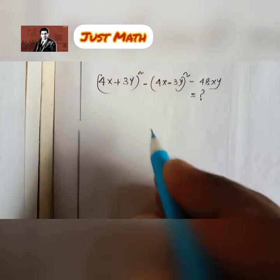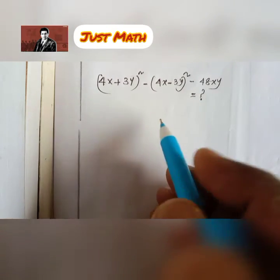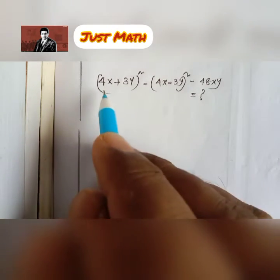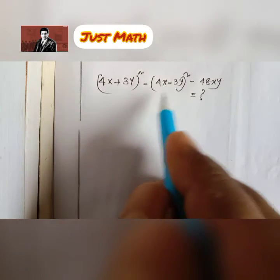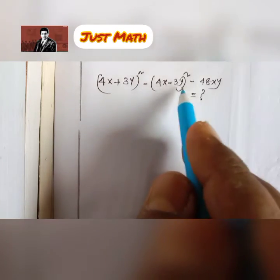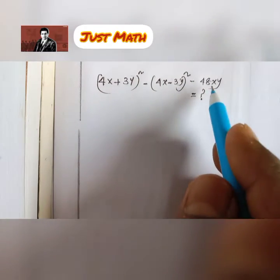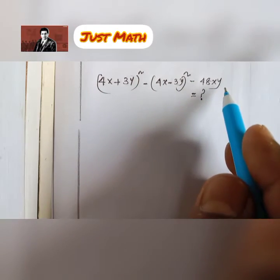Hello everybody. The question is: what is the value of (4x + 3y)² minus (4x − 3y)² minus 48xy?